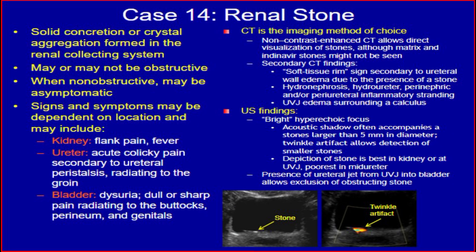The answer is a stone obstructing the right ureterovesical junction. A renal stone is a solid concretion or crystal aggregation formed in the renal collecting system; it may or may not be obstructive, and when non-obstructive may be asymptomatic. Signs and symptoms depend on location: a kidney stone causes flank pain and fever; a ureteric stone causes acute colicky pain with ureteral peristalsis radiating to the groin; a bladder stone causes dysuria and dull or sharp pain radiating to the buttocks, perineum, and genitalia.